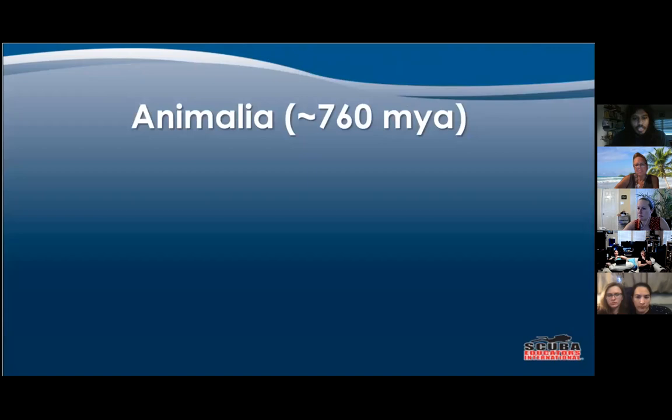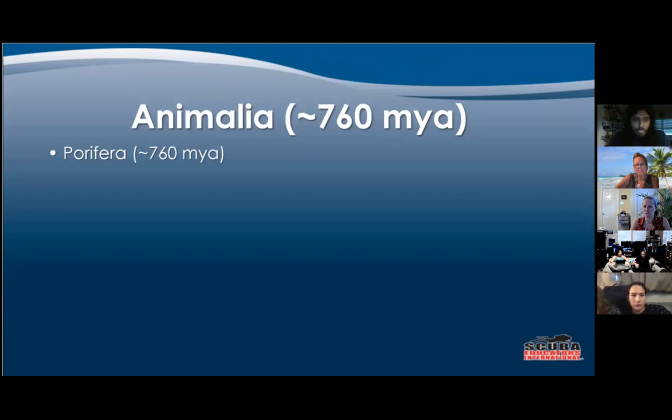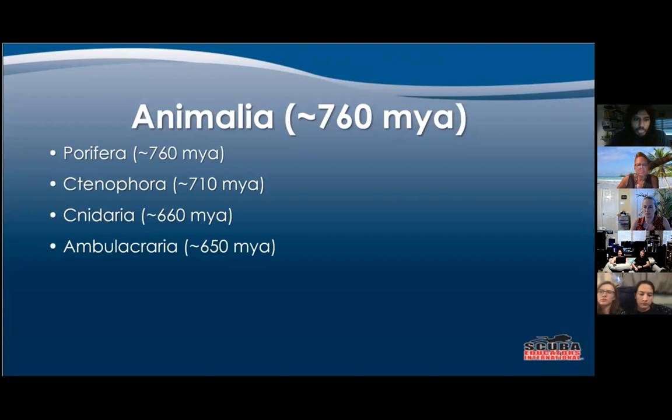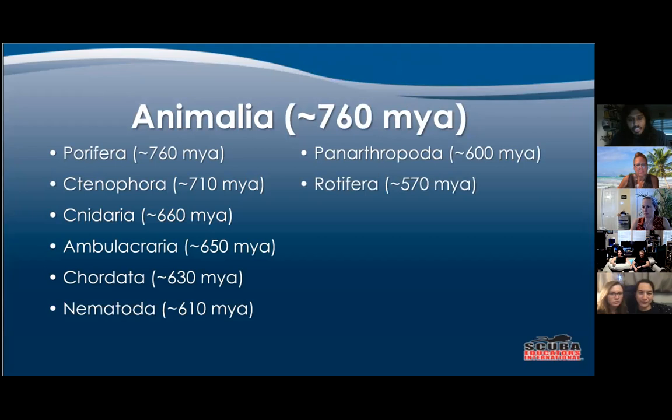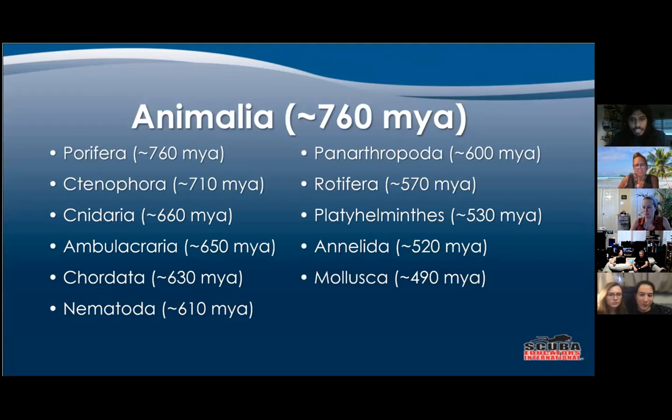We're going to jump straight into Animalia. They started differentiating about 760 million years ago. Porifera was the first one to branch off, and we have Ctenophora, Cnidaria, Ambulacraria, Chordata, Nematoda, Panarthropoda, Rotifera, Platyhelminthes, Annelida, and Mollusca. I'm going to be showing you a little about each one.